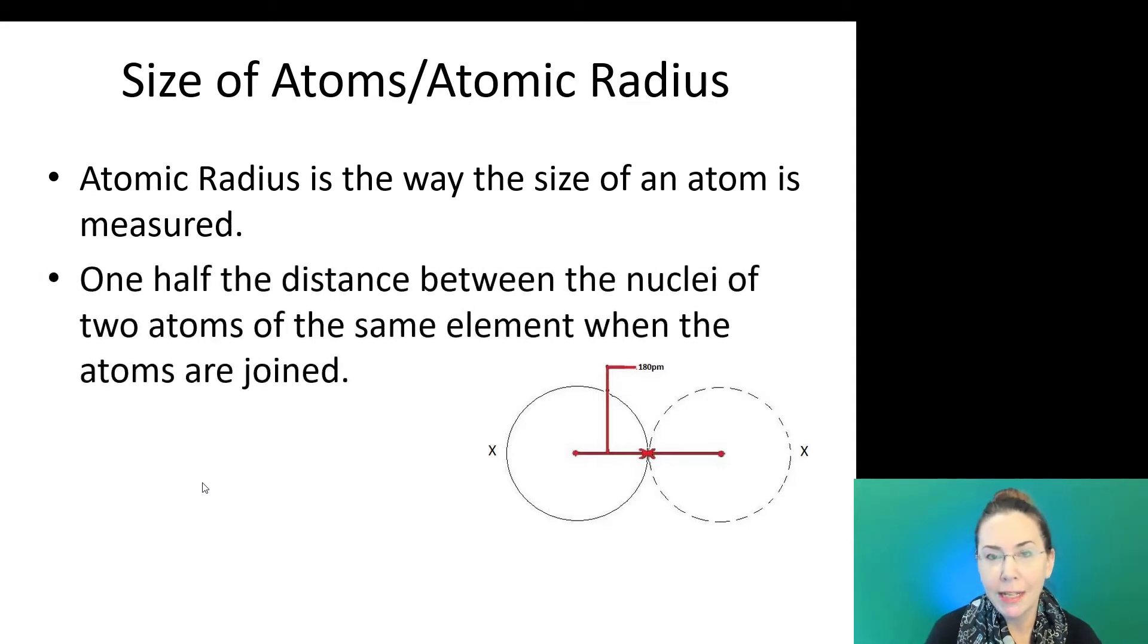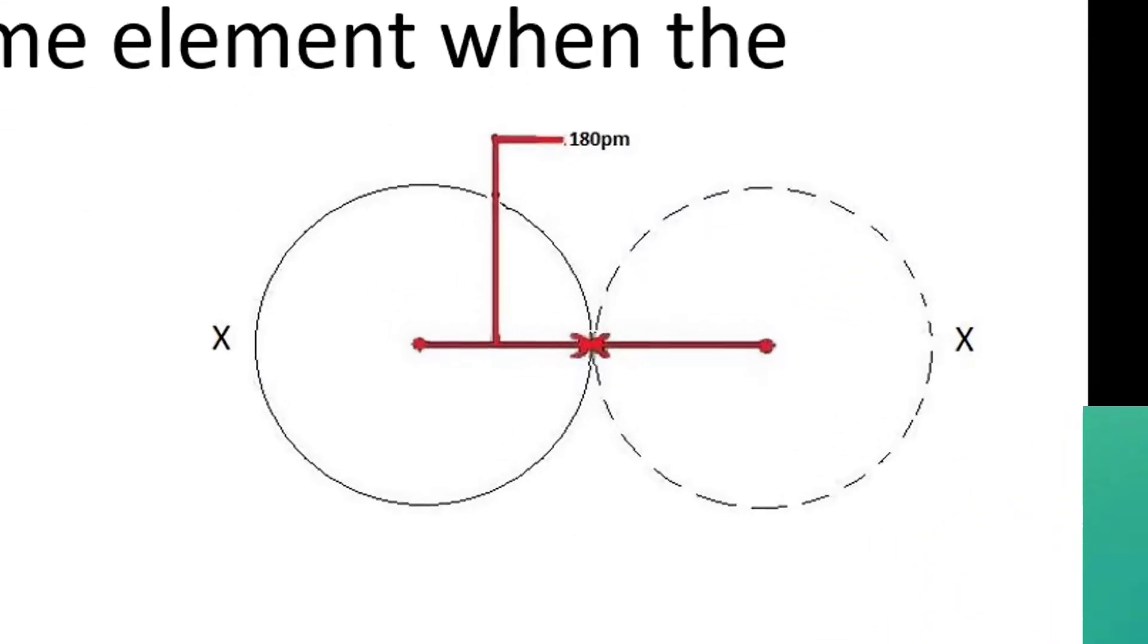It is defined as one half of the distance between the nuclei of two atoms of the same element when those two atoms are joined in close proximity. So if you look here, we have two atoms side by side. There is a line joining their nuclei and the distance between them would be 360 picometers, and half of that would be the atomic radius, which in this case would be 180 picometers.